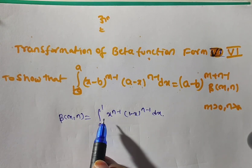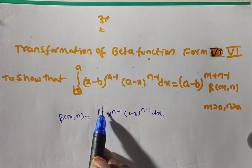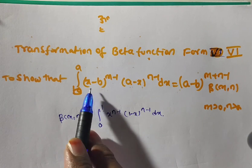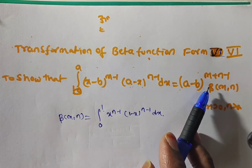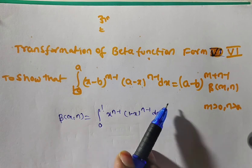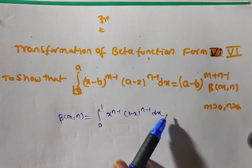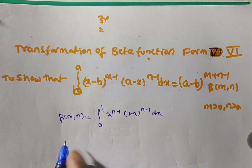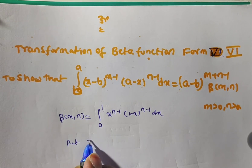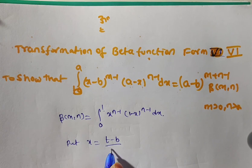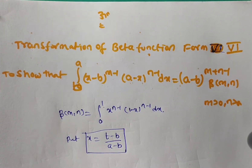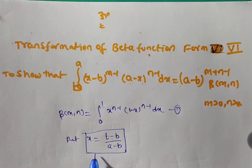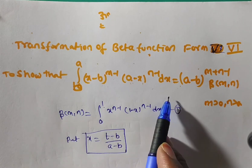Here we have to get lower limit b and upper limit a. In place of x we have x minus b, and in place of 1 minus x we want a minus x. The solution is also containing (a minus b) to the power m plus n minus 1. So to get this, we have to use substitution. That is very important — we have to put x equal to (t minus b) by (a minus b). If you remember this substitution, then only you can prove this very easily, otherwise you cannot. Remember, first write the definition, then put x equal to (t minus b) by (a minus b).